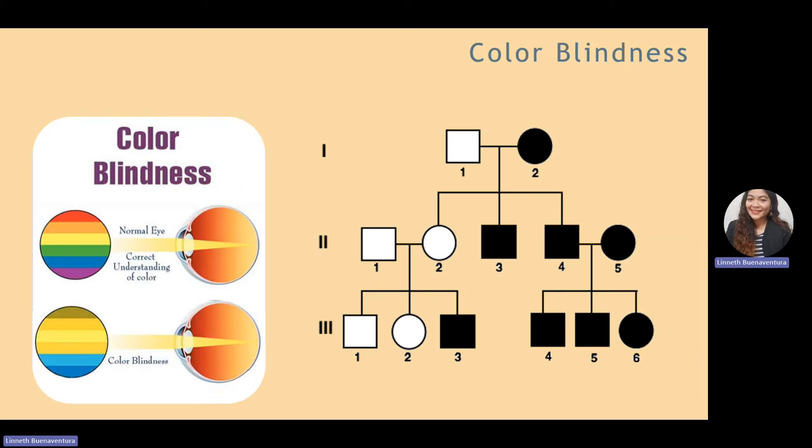The last example of X-linked recessive is color blindness, where the mother passes the X chromosome to her son, making the son colorblind. The third and fourth individuals in the second generation are colorblind. Individual four marries individual five, and since they are both homozygous for the disorder, all of their offspring in the third generation — individuals four, five, and six — have color blindness.